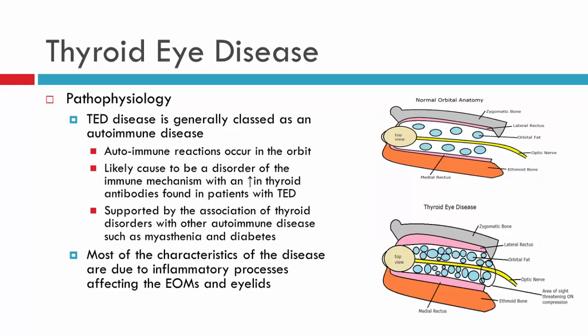In relation to thyroid eye disease, what is the pathophysiology? We know that thyroid eye disease is an autoimmune disease and that the autoimmune reaction occurs specifically within the orbit. Several factors support this: thyroid antibodies can be found in patients who only have thyroid eye disease and have no thyroid dysfunction at that time. Also, thyroid eye disease is associated with other autoimmune diseases such as myasthenia gravis or diabetes — about 5% of individuals with thyroid eye disease also have myasthenia gravis. The fact that conditions related to immune system dysfunction co-occur supports that the process within the eye is also autoimmune-related.